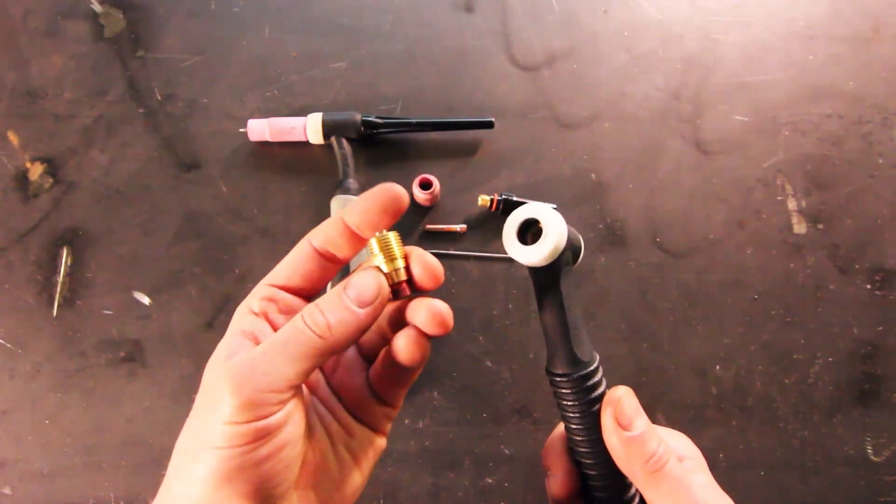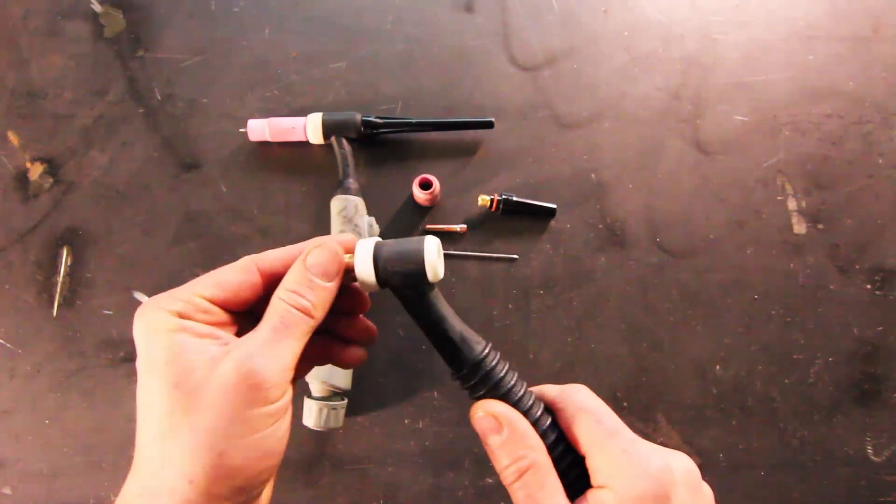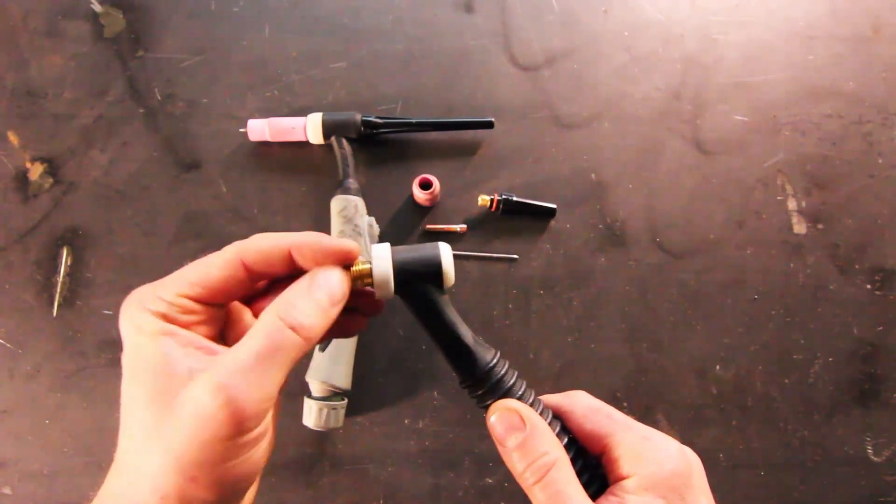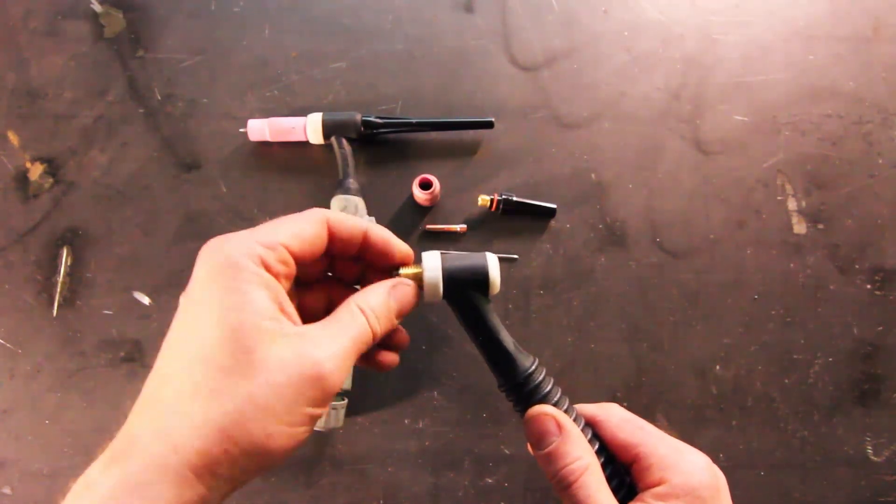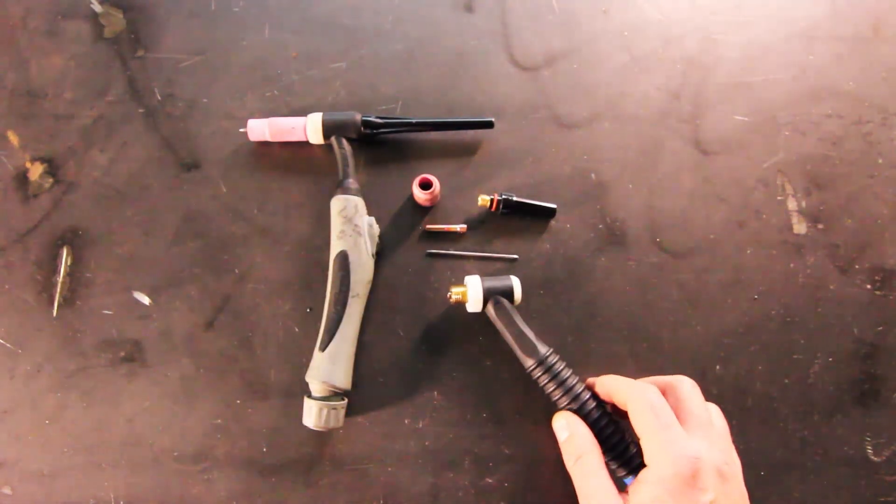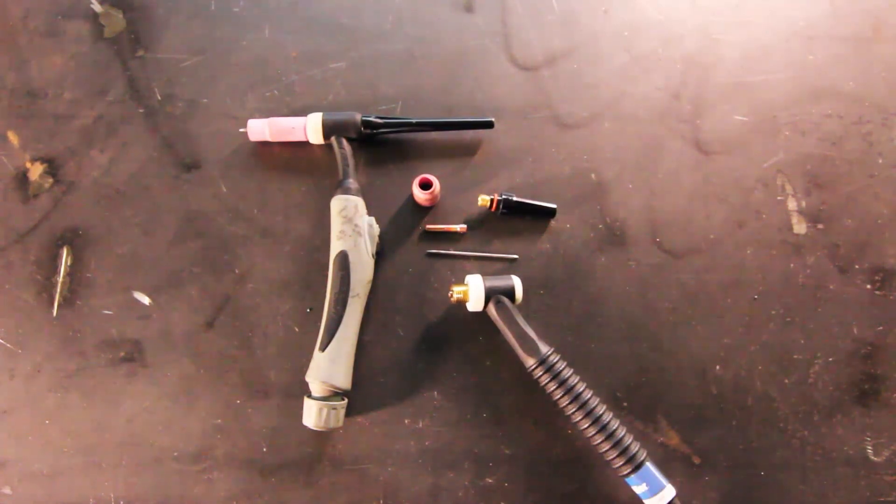It's the same structure, just a little bit different. The collet body has a diffuser in it, unlike a standard collet body that just has ports for the shielding gas to come out. There you have it - two setups for relatively the same air-cooled torch.